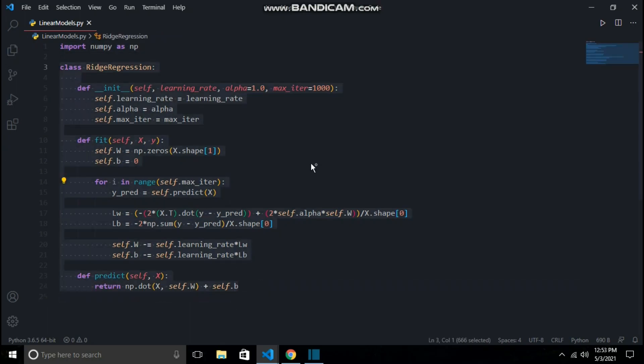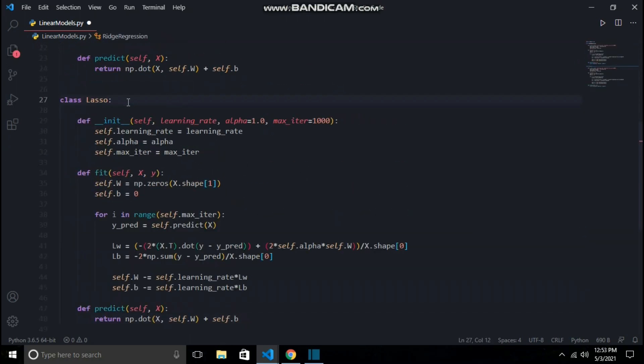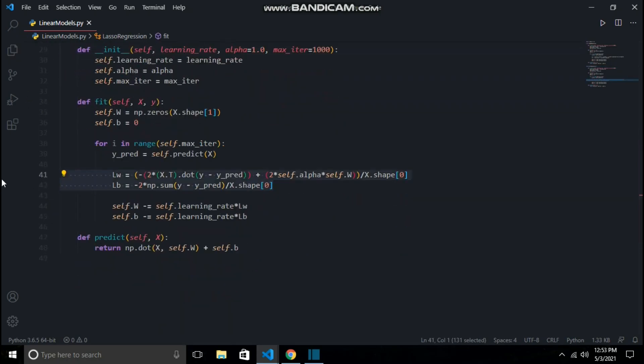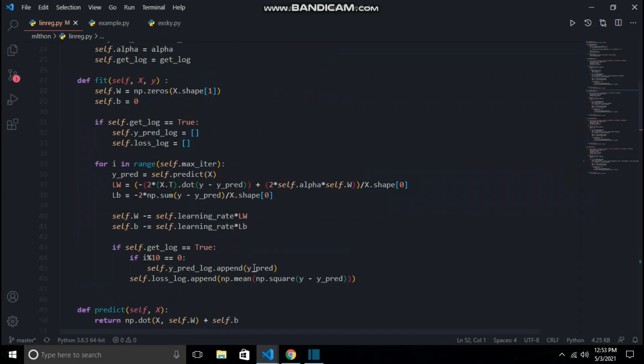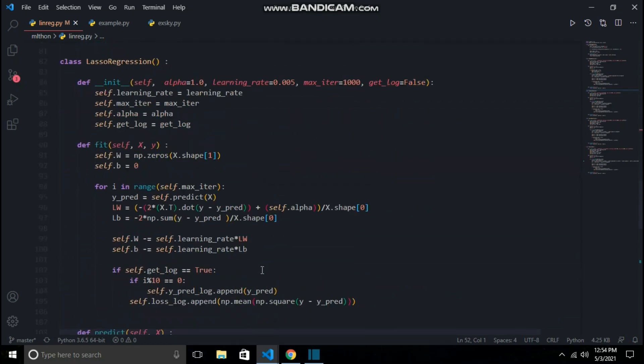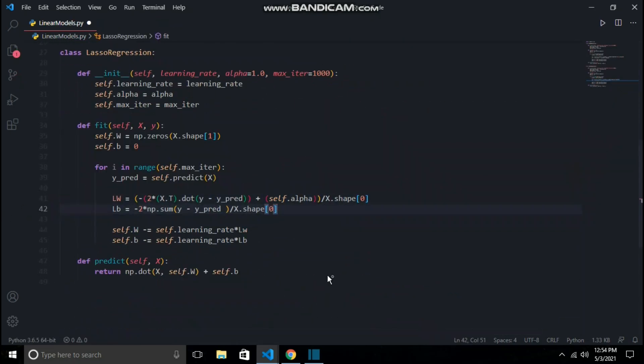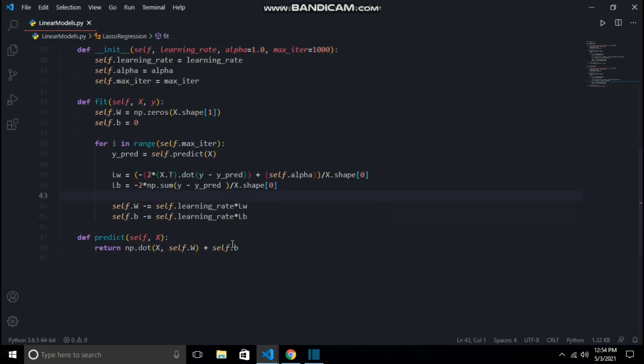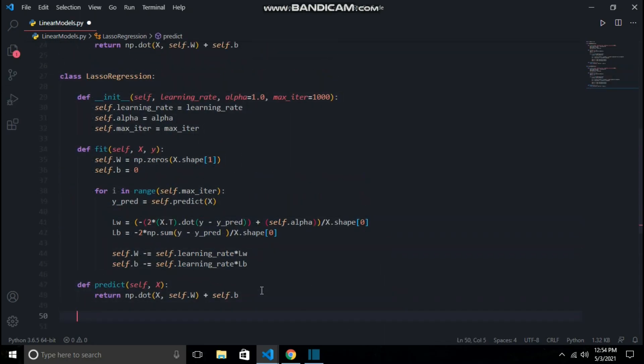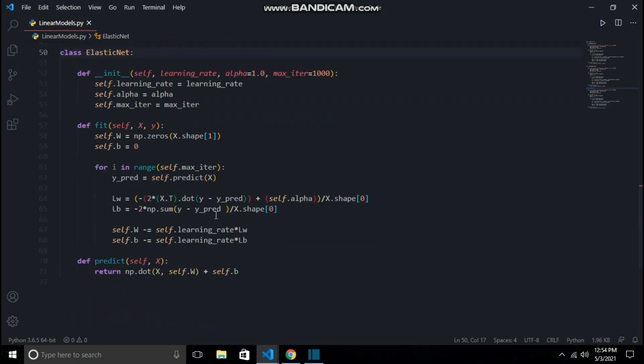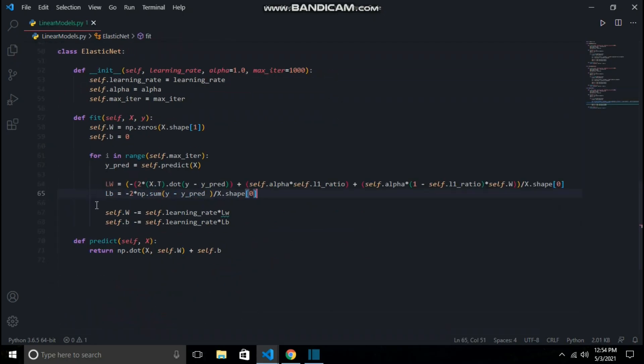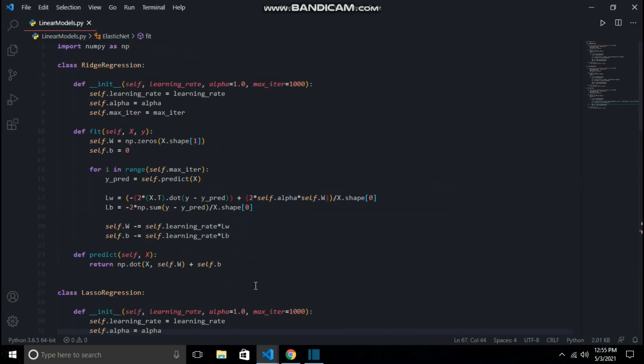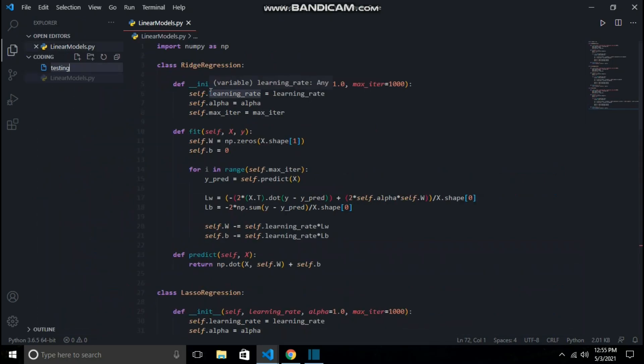I will copy this entire thing and just change ridge regression to lasso regression because everything remains the same except the formula of partial derivative. Let me paste the lasso's formula of dw and db and we have also made lasso regression. And then I will repeat the same, copying the entire thing and updating the value of dw and db by elastic net's actual values.